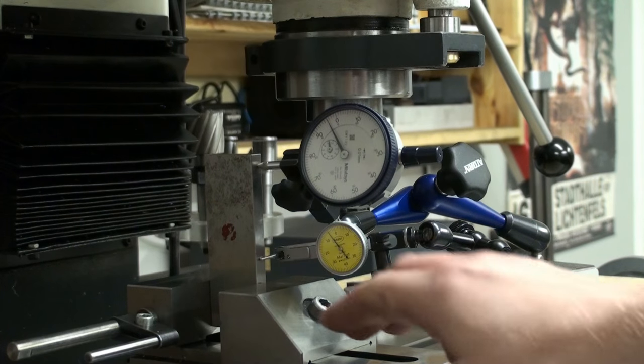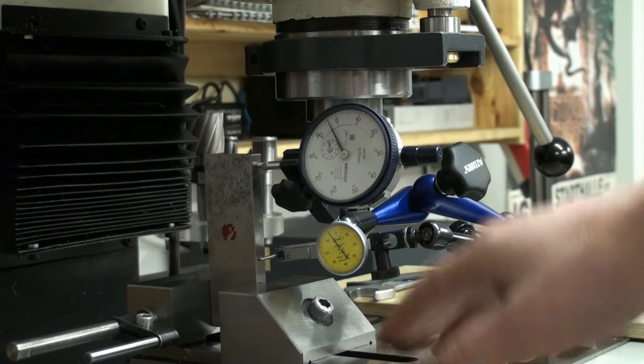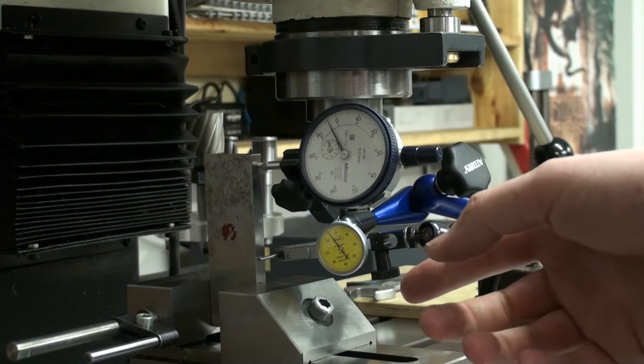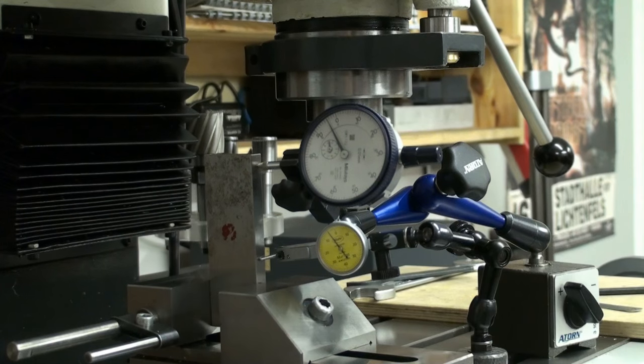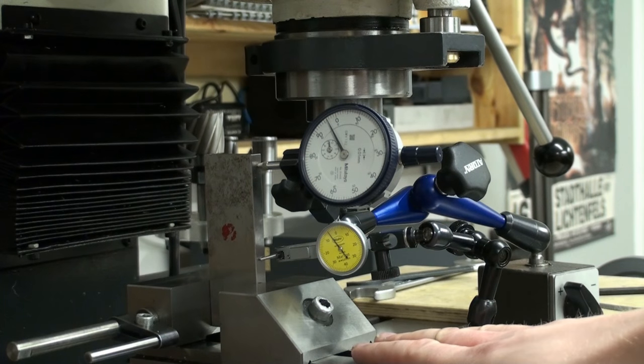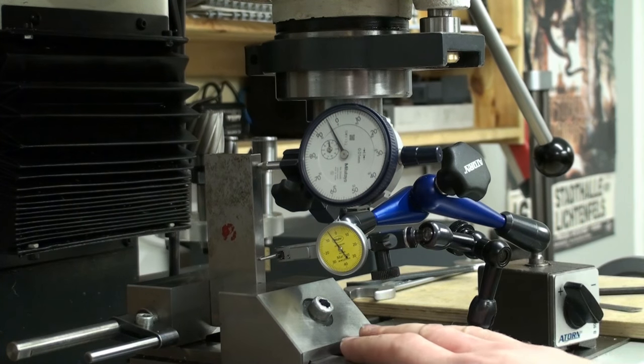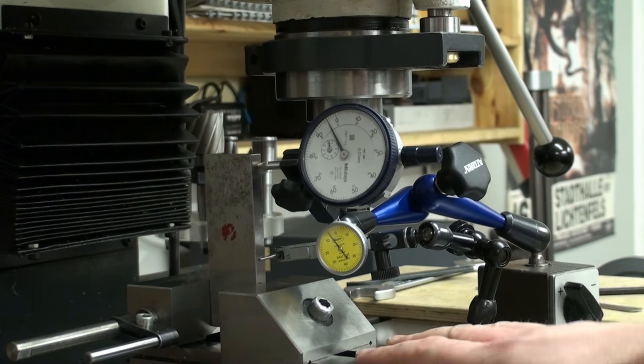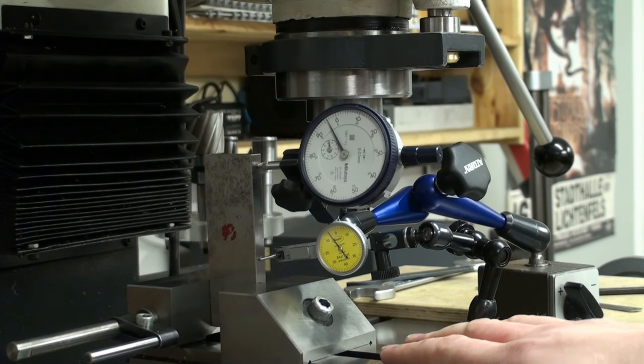So this vise is obviously way more precise, even under clamping pressure, than the shaper vise, and it holds up very nicely.